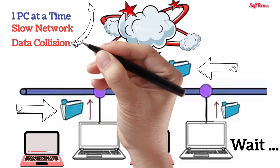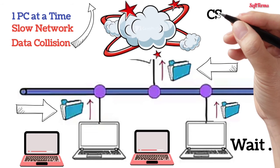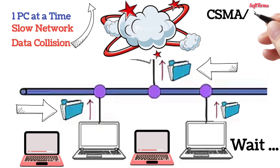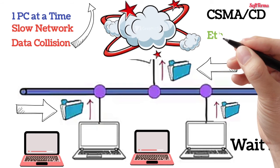It is one of the reasons why bus topology is rarely used in modern computer networks. The collision can be avoided by using an access control protocol. For example, Carrier Sense Multiple Access with Collision Detection (CSMA/CD) is such a protocol. An example of bus topology is an Ethernet LAN.